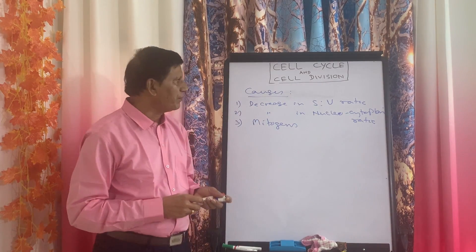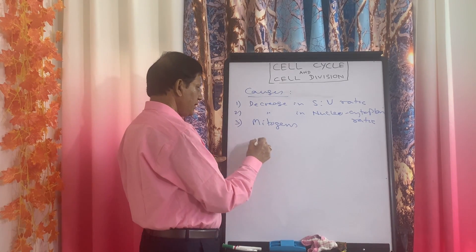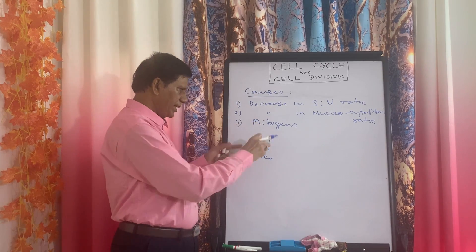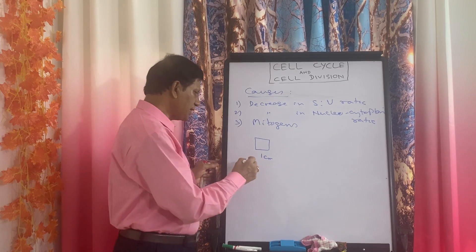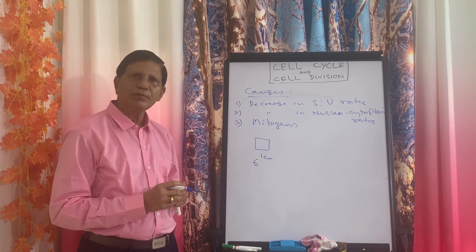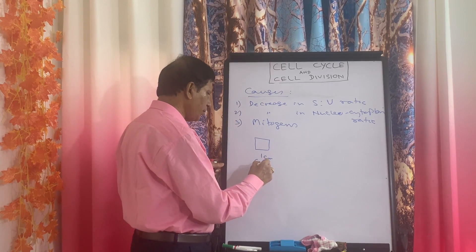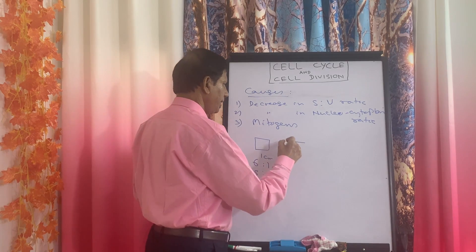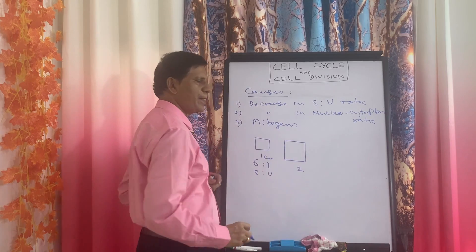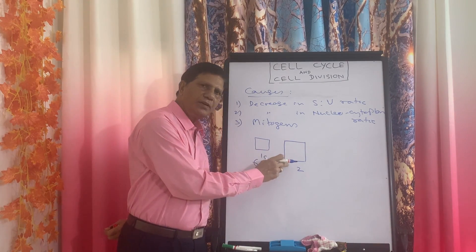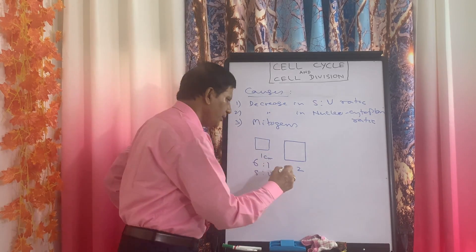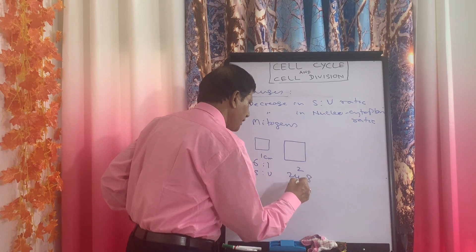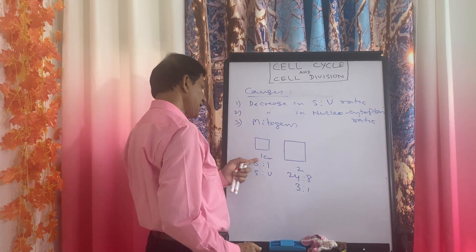First, consider the decrease in surface-to-volume ratio. Take a small cell whose dimension is 1 centimeter. It has six sides, each side is 1 square centimeter, so the surface is 6 and the volume is 1³ = 1. The surface-to-volume ratio is 6:1. Now suppose the cell increases in size to dimension 2 — each side is 4 square centimeters, six sides gives surface 24, volume is 2³ = 8. The ratio is now 3:1. Again the size increases to dimension 3 — surface is 54, volume is 27. So it becomes 2:1.